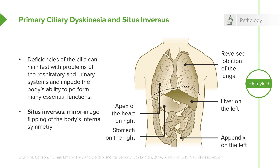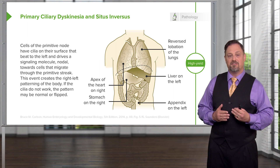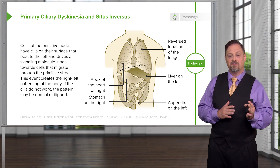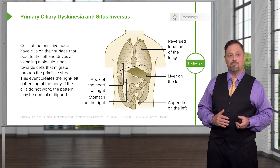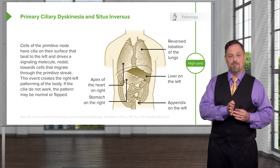The body is able to make this determination because a group of cells on the primitive node, right on the midline where involution is occurring, have cilia that beat to the left. As they beat to the left, they drive a signaling factor released by those nodal cells called nodal. So the primitive node releases the signaling molecule nodal, and the cilia beat that signaling molecule to the left, which influences the cells migrating under the left side to form left-sided structures.